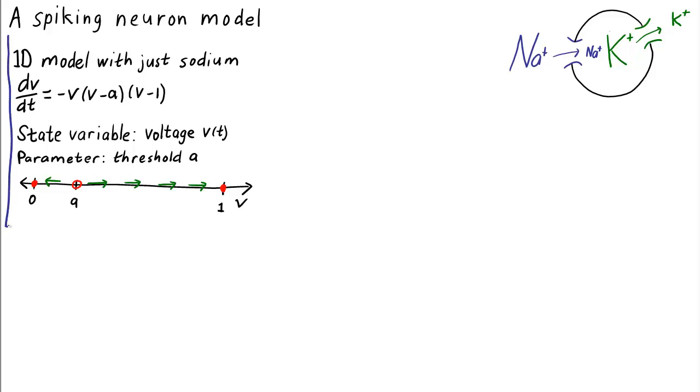So far, we've built a one-dimensional autonomous differential equation model that just incorporates the effects of sodium. In the model, dV/dt equals negative V times (V minus A) times (V minus 1), the voltage lives between 0 and 1. If it starts below the threshold V equals A, the voltage decays to 0. If it somehow gets kicked above the threshold, such as via receiving enough input from other neurons, then the voltage rises to 1 and stays there.